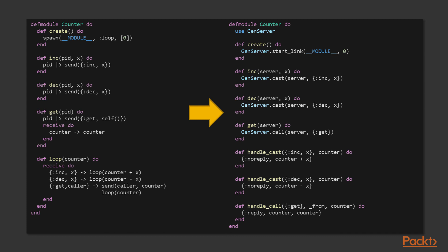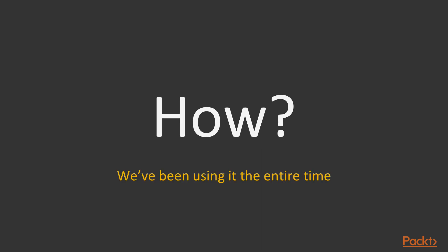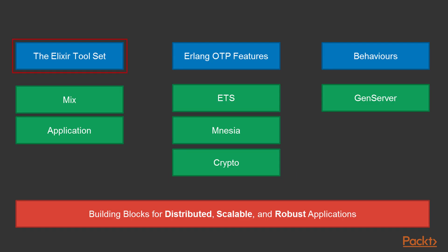So this should give you a good indication of why we should strive to use OTP. Besides our gen_server example, how exactly can we get the most out of the OTP features in Elixir? If you've been following the course and coding some examples on the side, you'll notice we've been actually using OTP the entire time. We use OTP via the Elixir toolset when we build and import applications using Mix. We also use OTP via Erlang features, as you've seen with ETS, DTS, and Mnesia examples, as well as some cryptographic functions that too are part of OTP and available via Erlang modules. And finally, you've seen the small example of the gen_server behavior, though there are a few more to explore, so I won't spoil the surprise. It's OTP that actually provides the building blocks for achieving distributed, scalable, and robust applications in Elixir.